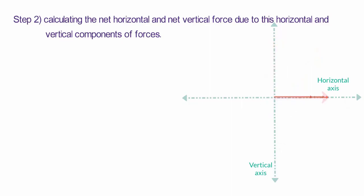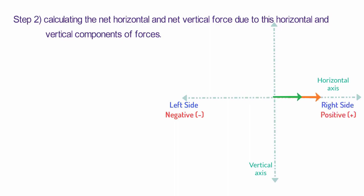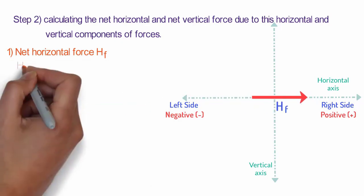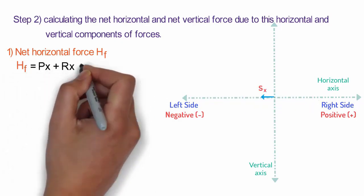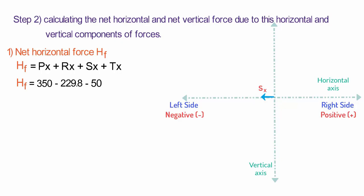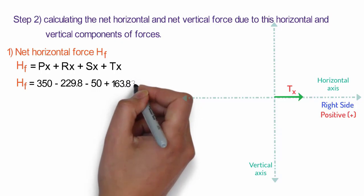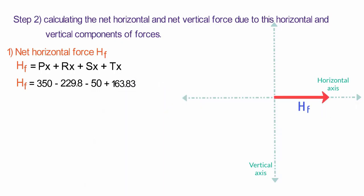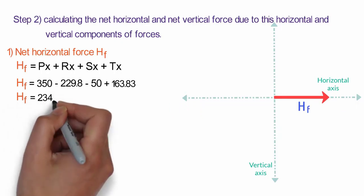While summing up horizontal forces, forces acting toward the left are taken as negative and forces acting toward the right are taken as positive. Therefore net horizontal force Hf = Px + Rx + Sx + Tx. Putting the values: Px = +350 N (acting right), Rx = −229.8 N (acting left), Sx = −50 N (acting left), plus Tx = 163.83 N. After simplifying, Hf equals 234.03 Newton.